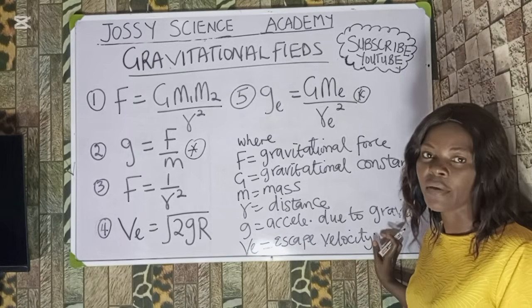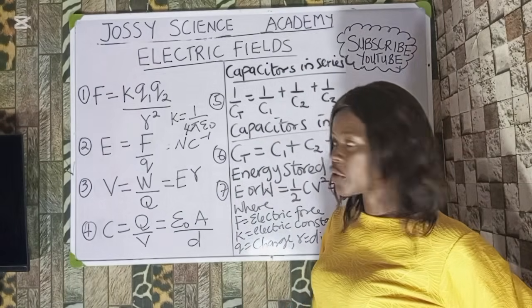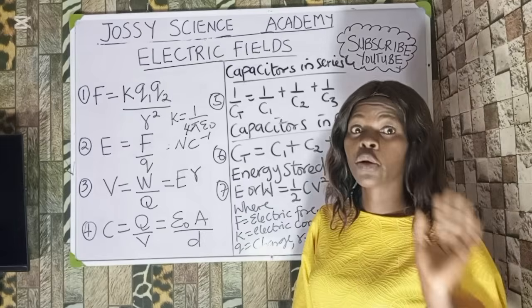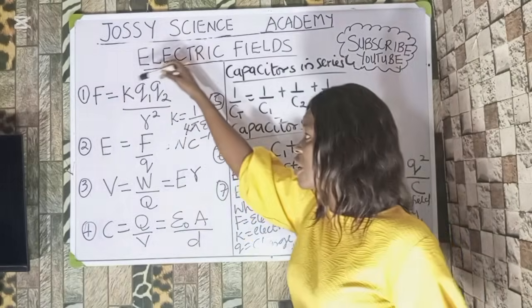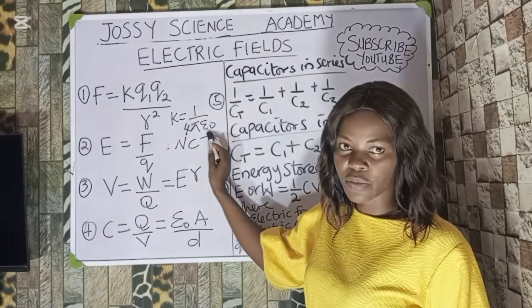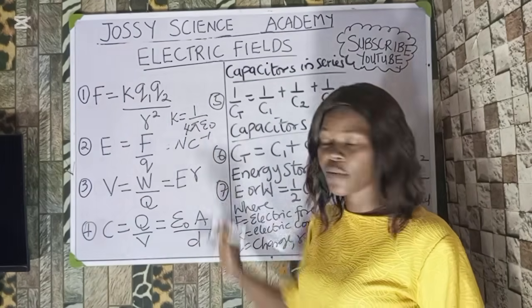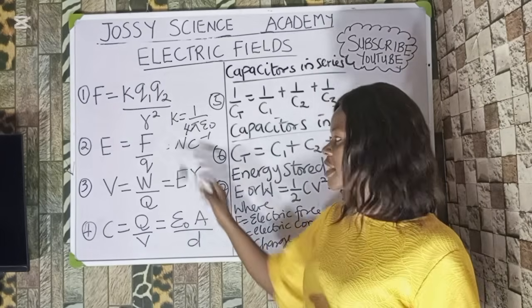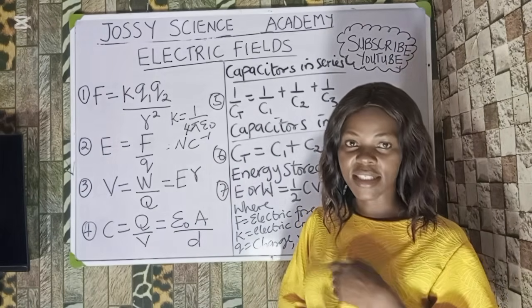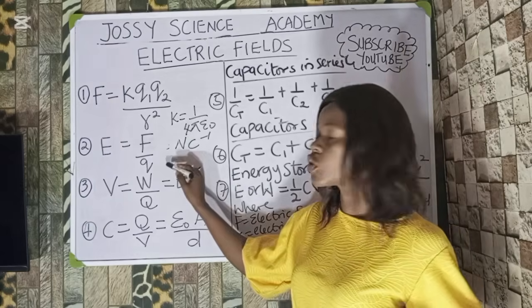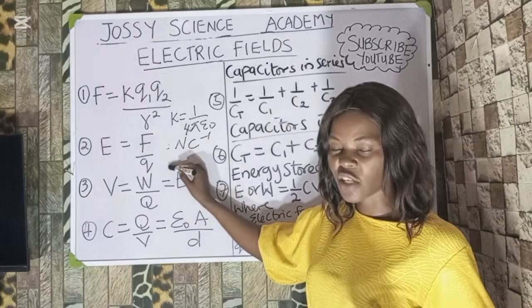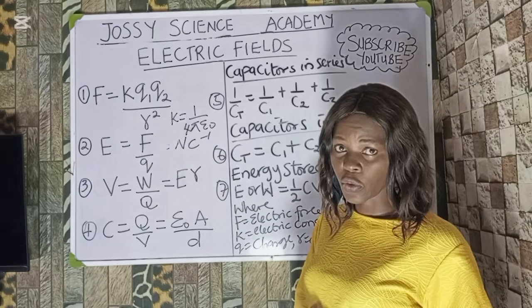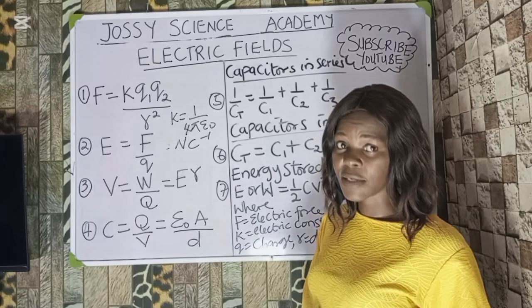Now let's go to electric field. The first formula is the electric force: F equals k·Q₁·Q₂ over R squared. This comes from Coulomb's law. K is the electric constant, also equal to 1 over 4πε₀. Q₁ and Q₂ are the charges and R is the distance between them. The second formula is electric field intensity E, defined as the force experienced by a unit positive charge — that is E equals force over charge, with units of Newtons per Coulomb.